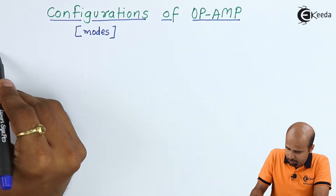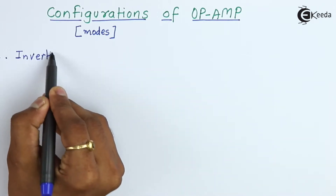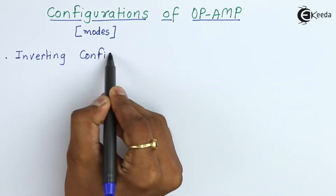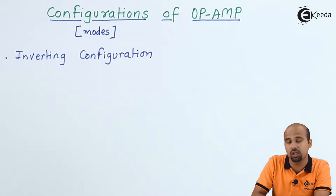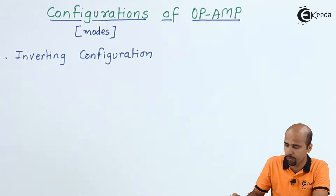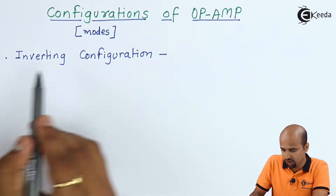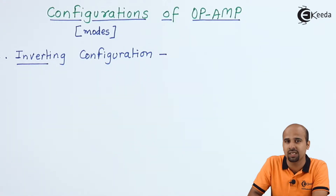The first and very important mode that we will study is the inverting configuration. Whenever an amplifier is used in inverting configuration, that means we are using the op-amp in inverting mode. The inverting term indicates that we are applying input to the inverting terminal.